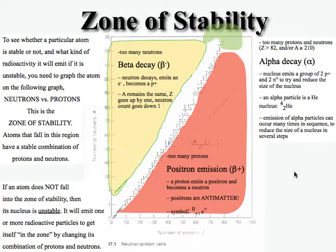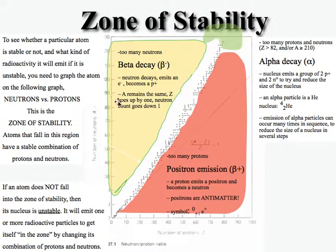There is a zone of stability. If an isotope has too many neutrons, it tends to go through beta negative decay, which helps a neutron become a proton and improve that ratio. If it has too many protons, it tends to go through beta positive decay, which helps a proton turn into a neutron and again improve that ratio.